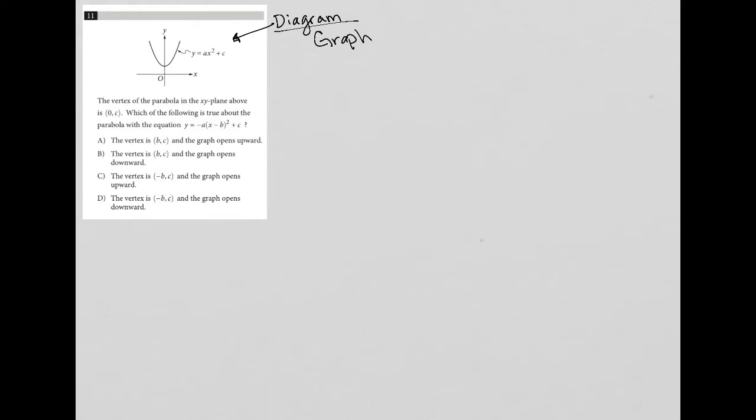This question shows us this graph. We see this parabola. We have an equation. The equation isn't all that helpful because it's all variables. There's no numbers at all. But we know that C is positive because the parabola is shifted vertically, and that's pretty much all that we know. The question says the vertex of the parabola in the XY plane above is (0, C), which makes sense, right, because of the C right here.